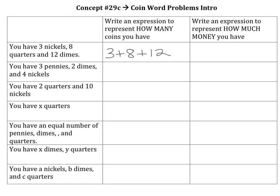The next one — write an expression to represent how much money you have. You have to think about this. If you have three nickels, you have to think about how much money that is. Nickels are worth five cents, so you need to multiply five cents times three. I would just say five times three — that gives the answer in cents. If you want the answer in dollars, you would say 0.05 times three. Either is acceptable.